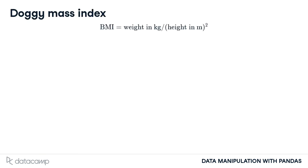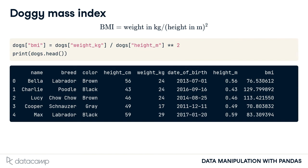Let's see what the results are if we calculate the body mass index, or BMI, of these dogs. BMI is usually calculated by taking a person's weight in kilograms and dividing it by their height in meters, squared. Instead of doing this with people, we'll try it out with dogs. Again, the new column is on the left-hand side of the equals, but this time our calculation involves two columns.